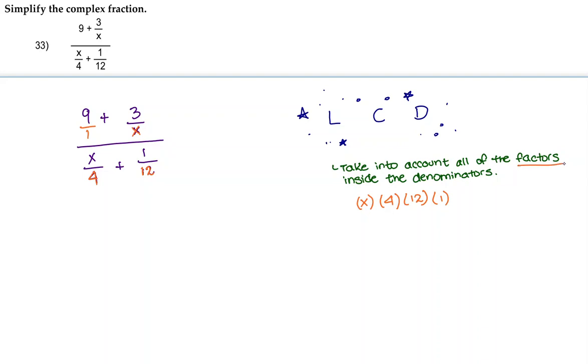So we're only looking at the factors of the denominators. This x in its most factored form is just x. The 4 in its most factored form is 2 to the power of 2, and this 12 in its most factored form is 3 times 2 to the power of 2. And then this 1 is just 1. This 1 doesn't really matter, but I'll leave it there just for clarification.